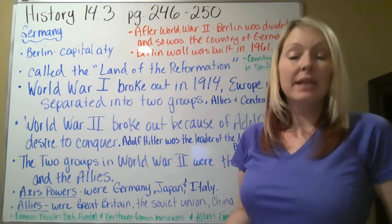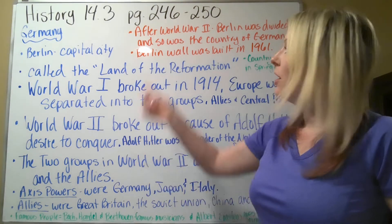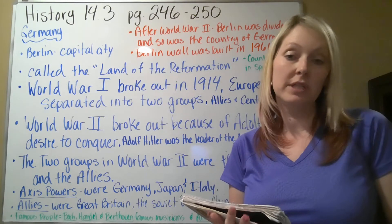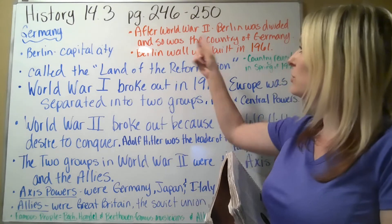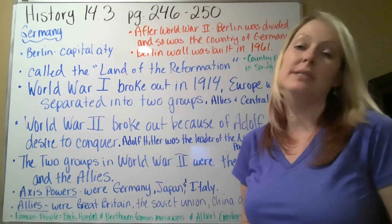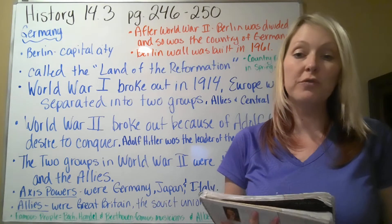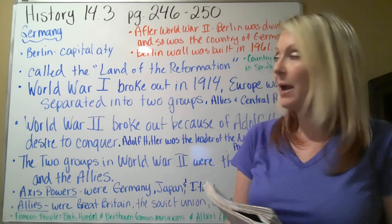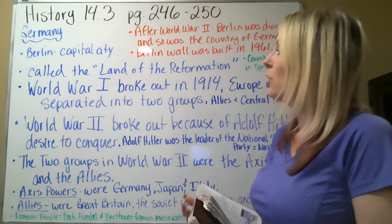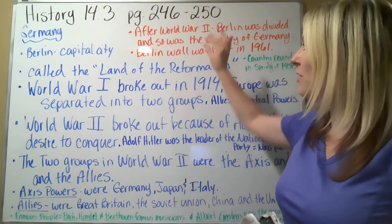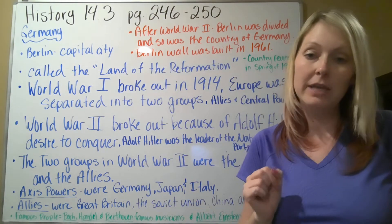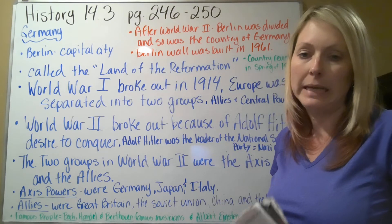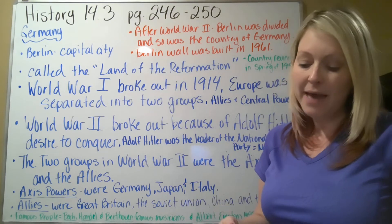Fifth grade, we're going to go ahead and get started on our history section. We are still in 14.3, doing pages 246 to 250 today, and we are going over Germany. I'm going to go through blue, then red, and then green — just so that you know why I'm color coordinated here.